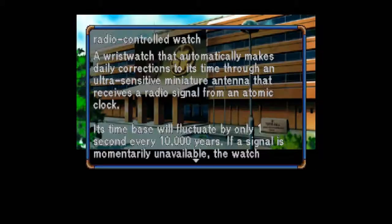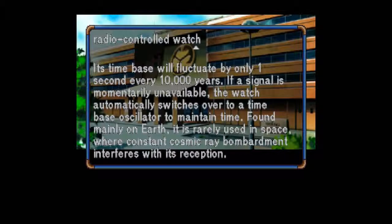Radio Controlled Watch: A wristwatch that automatically makes daily corrections to its time through an ultra-sensitive miniature antenna that receives a radio signal from an atomic clock. Its time base will fluctuate by only one second every 10,000 years. If a signal is momentarily unavailable, the watch automatically switches over to a time-based oscillator to maintain time. Found mainly on Earth, it is rarely used in space, where constant cosmic ray bombardment interferes with its reception.